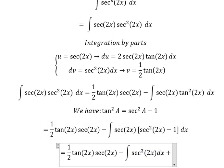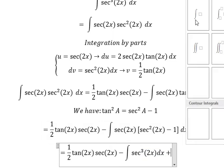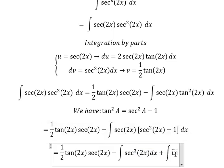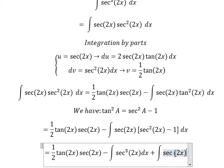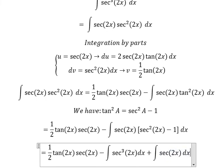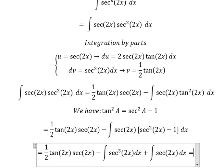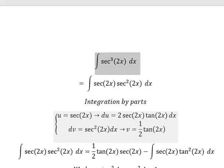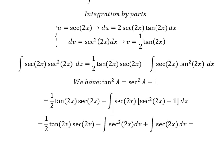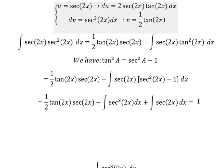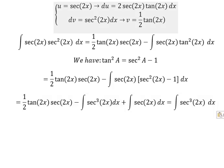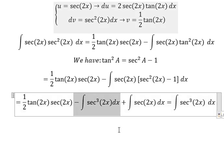And we have the integration of secant(2x) dx. We know that everything in here equals to this one — the original integral. So now I will move this one over to the right side.